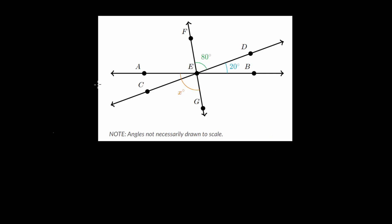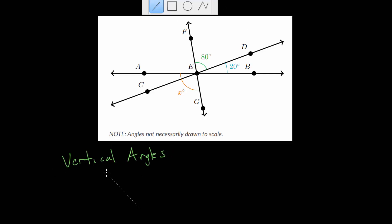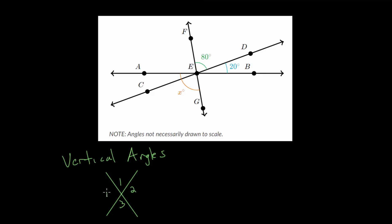Let's remind ourselves what vertical angles are. If we have two intersecting lines, the angles opposite each other are equal. If we label these one, two, three, and four, angle one and angle three are vertical angles, and likewise angle four and angle two are also vertical angles.